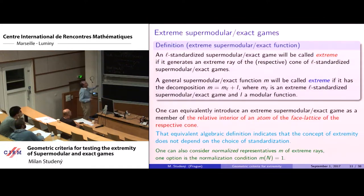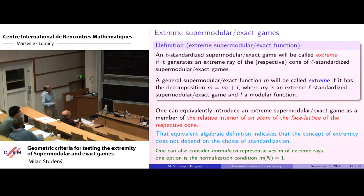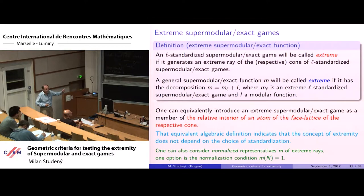The formal definition of extremity: a standardized function is extreme if it generates an extreme ray of the respective cone. We have extremity for the supermodular cone and extremity in the exact cone, which can be different concepts. This definition can be extended to a general function using the decomposition, and it is equivalent to membership in the relative interior of an atom of the face lattice of the cone.